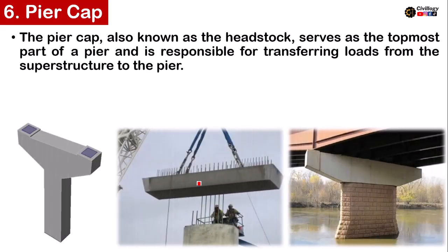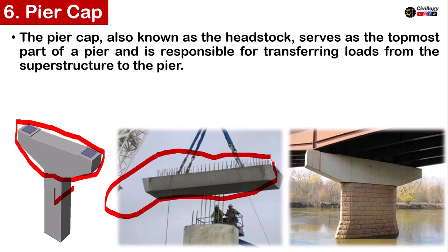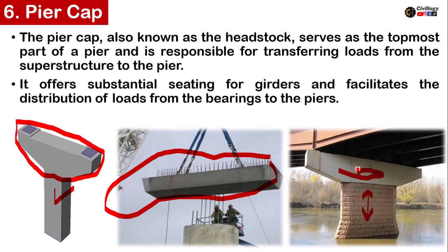As you can see, this is the pier, and the structure over the pier is called the pier cap. It can be of different shapes. This structure is the pier and this structure is called the pier cap. It offers substantial seating for girders and facilitates the distribution of loads from the bearings to the piers.